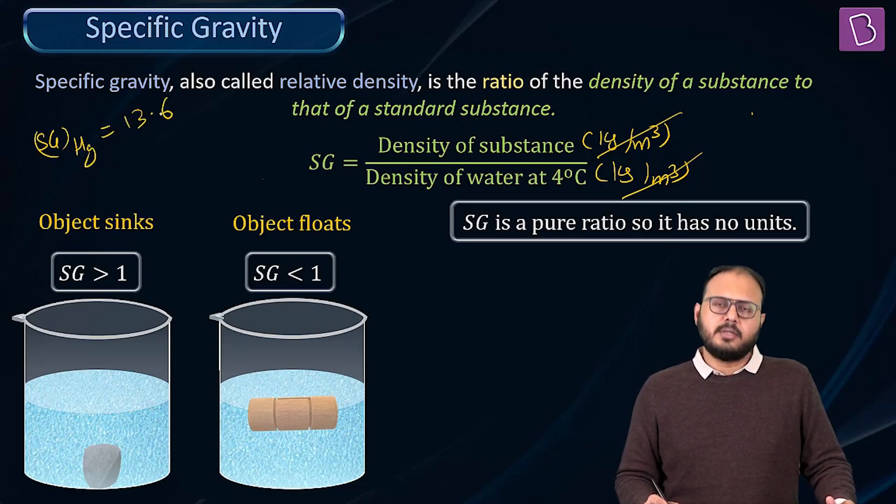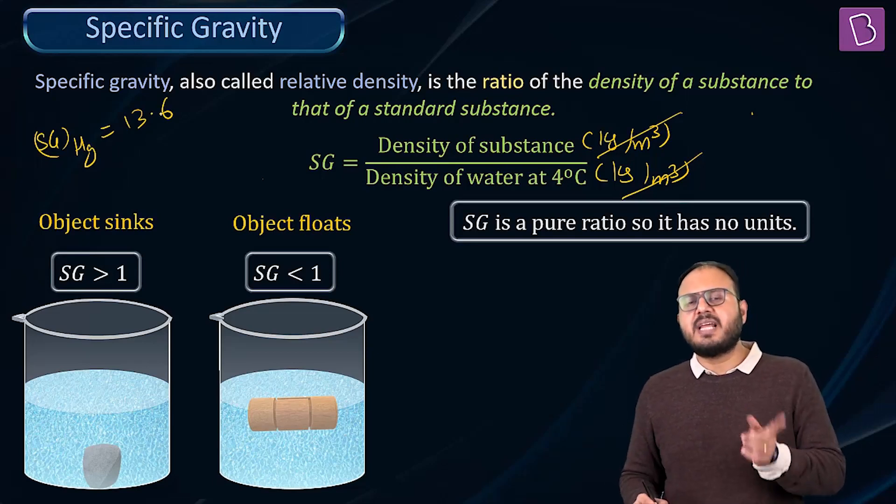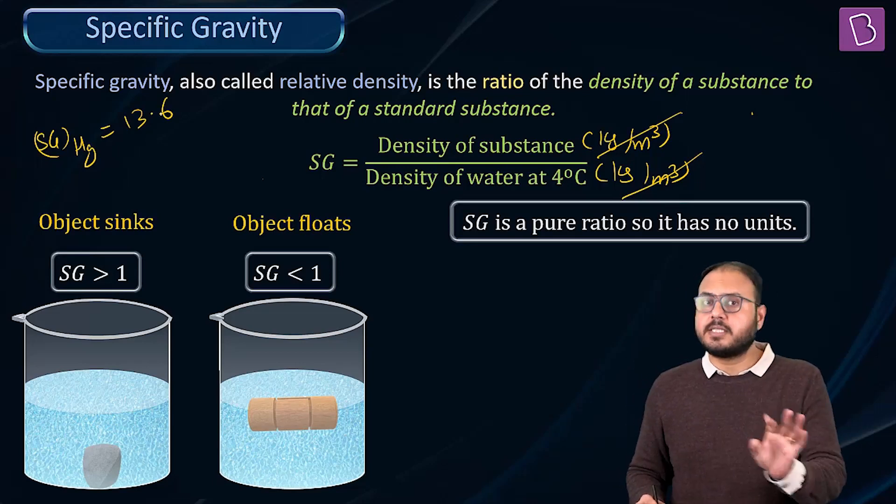Why? 13,600 upon 1,000. In other words, if the density of water is taken as 1 gram per cc, then your relative density is nothing but gram per cc dvalla density minus the units. Nothing else. In other words, if you ask me, what is the specific gravity of mercury? My answer should be what? 13.6.